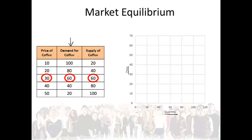Let's start with the demand curve for coffee. At a price of 10 rand people will demand 100 units of coffee. At a price of 20 rand people will demand 80 units of coffee. At a price of 30 rand people will demand 60 units of coffee. At a price of 40 rand people will demand 40 units of coffee. At a price of 50 rand people will demand 20 units of coffee.